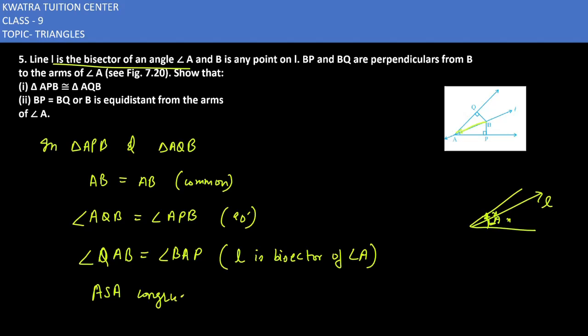Now we have to show that BP is equal to BQ. So we can write that by CPCT, BP is equal to BQ by CPCT. So that's your answer for the fifth one. Now we will be moving to the next question.